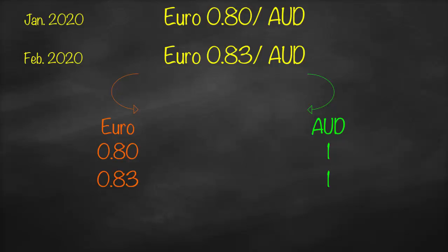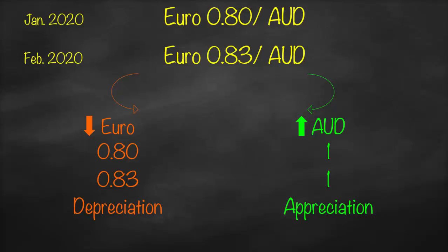So this means that in order to get the same one unit of Australian dollar, we need to pay more euros. If we need to increase the number of units of euros to get the same unit of Australian dollar, it means that its value becomes lower. Remember: if you increase the number of units, the value will be lower, not higher. Therefore, for the same one Australian dollar, we will get more units of euro, so the Australian dollar's value goes up — which is called appreciation — and the value of the euro will go down — which is called depreciation.